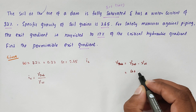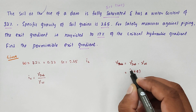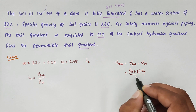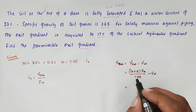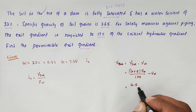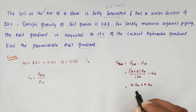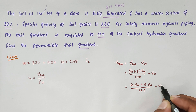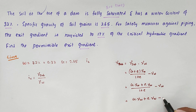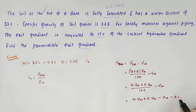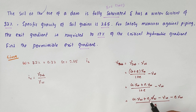The formula for gamma saturation is: (G + E·S) · γ_w divided by (1 + E), minus γ_w. Since S equals 1, this becomes (G·γ_w + E·γ_w) divided by (1 + E), minus γ_w. Cross-multiplying gives G·γ_w plus E·γ_w minus γ_w minus E·γ_w, all divided by (1 + E).